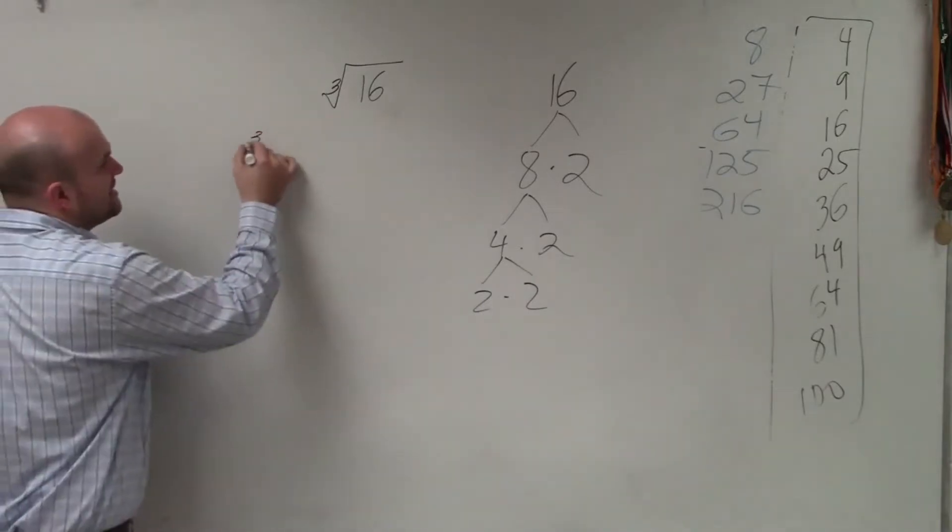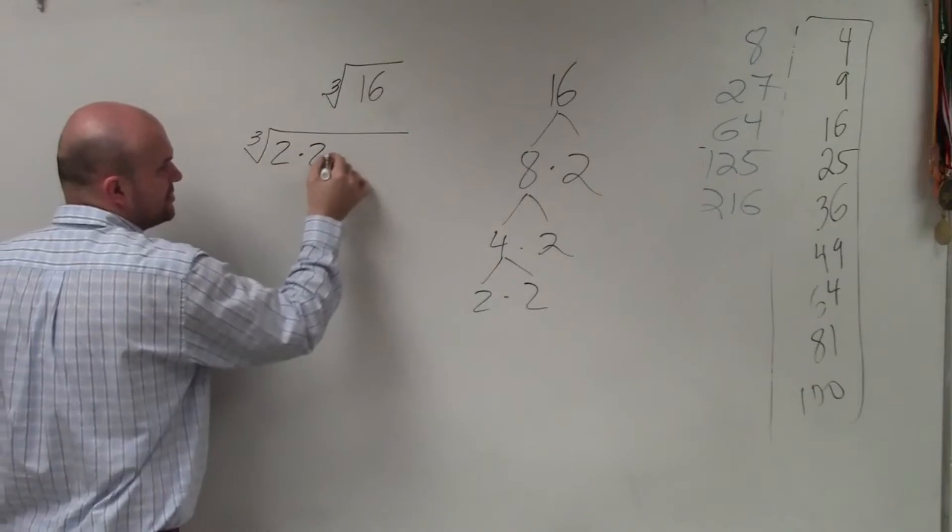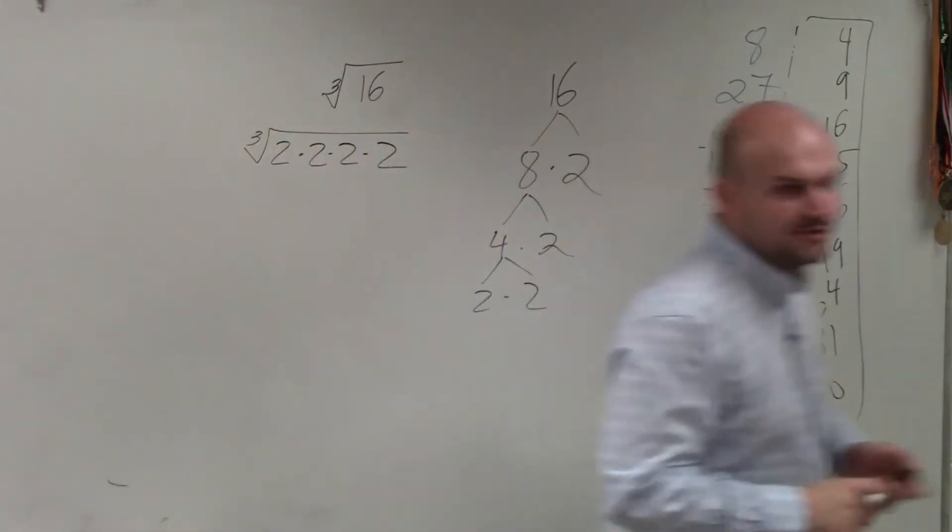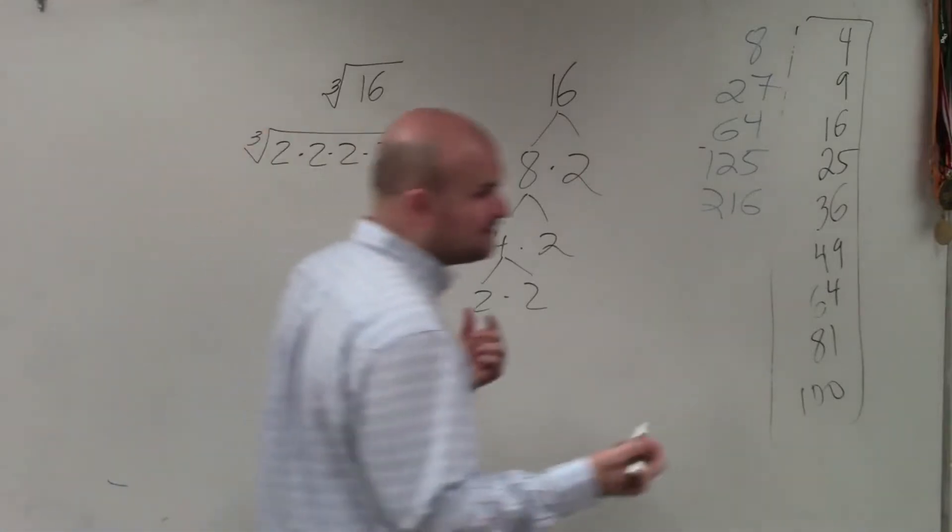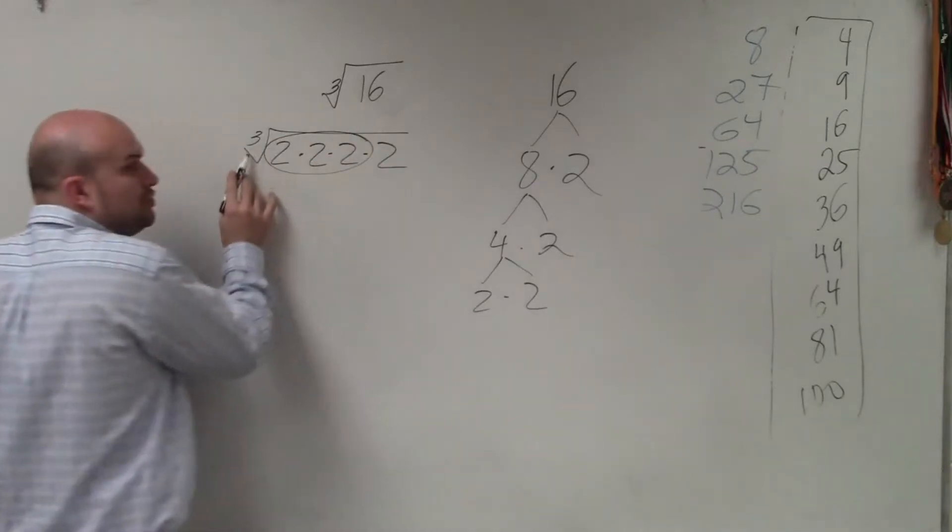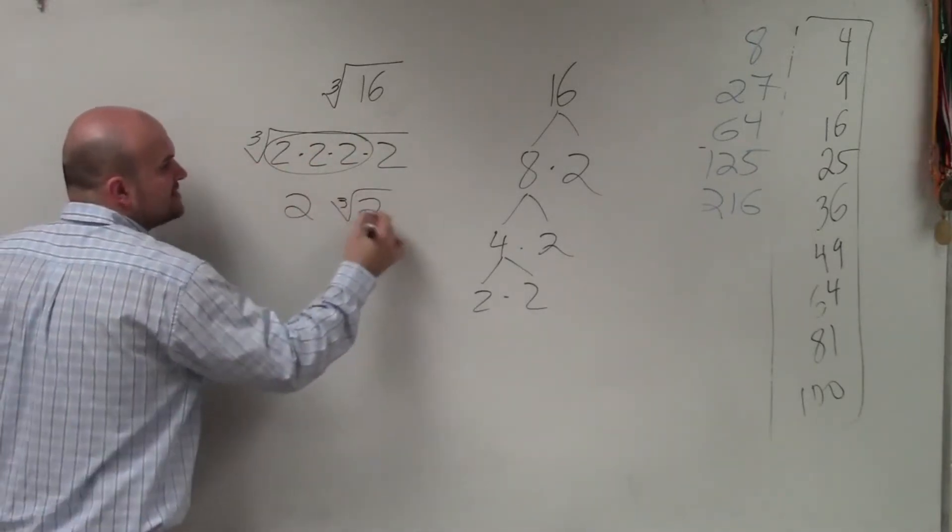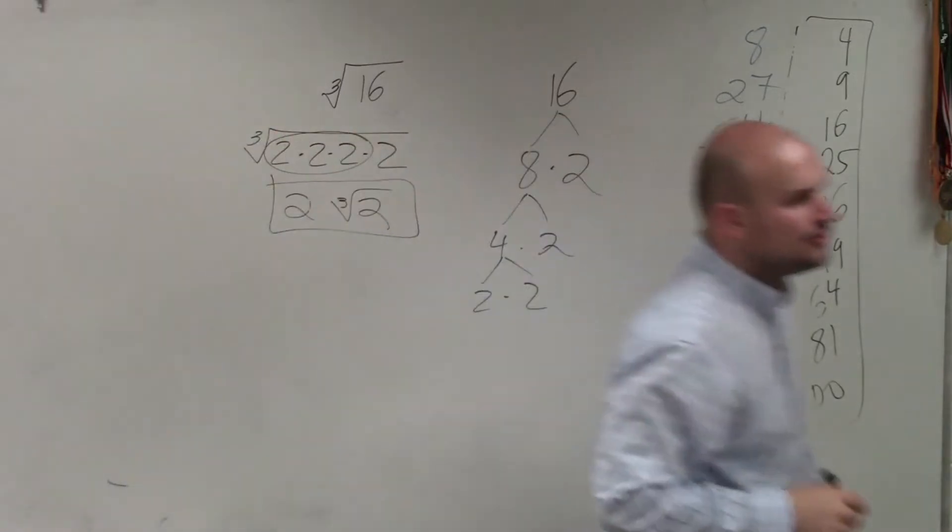So what I want you guys to understand is that the cube root of 16 is the same thing as 2 times 2 times 2 times 2. If you take the factor tree and then write your number as a prime factorization, now to take the cube root, you need to group how many of the 2's? Three. So the cube root of 2 times 2 times 2 is just 2, and then you still have a 2 left under your radical.